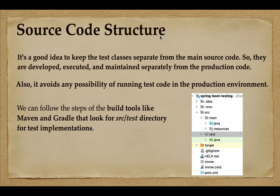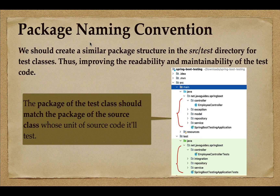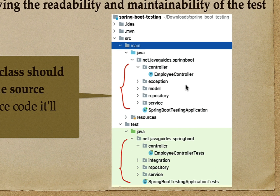The next best practice is package naming conventions. We should create a similar package structure in the src/test directory for test classes — this improves the readability and maintainability of the test code. For example, in a Spring Boot application we typically create packages like controller, model, repository, and service, and we keep respective classes under these packages. To test those classes, we should create a similar package structure under the src/test folder.